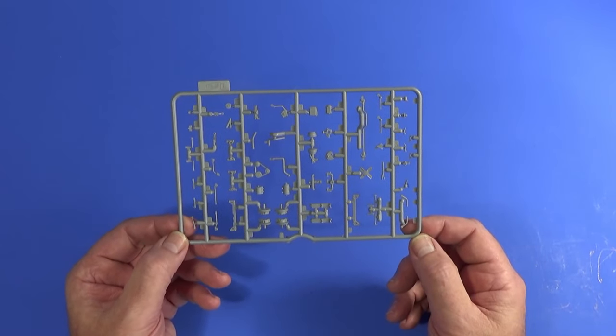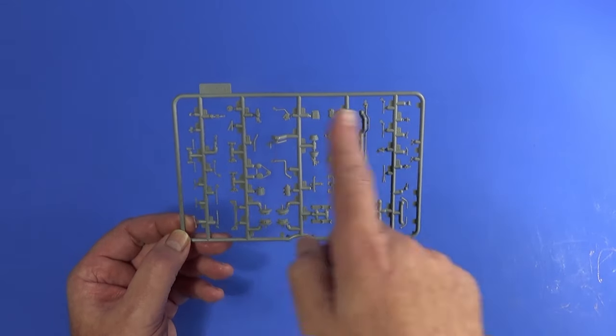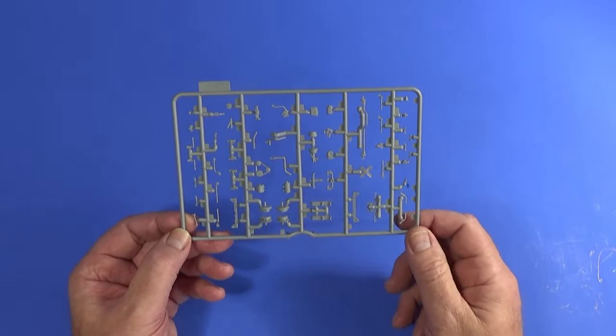Frame D has smaller components of the engine and transmission, the gear stick and things like that for the interior, pedals and whatever.